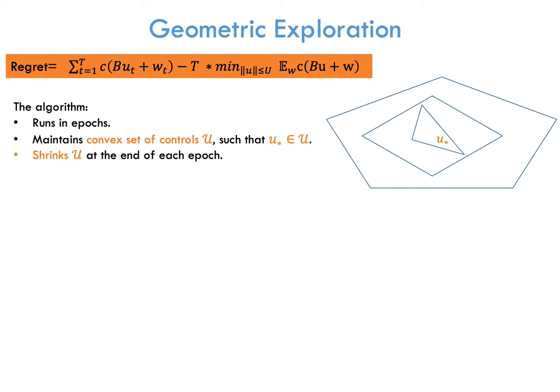For this special case, our algorithm has the following form: it runs in epochs, and it maintains a convex set of controls that we call U, and which contains the optimal control U star. Also U shrinks at the end of each epoch.